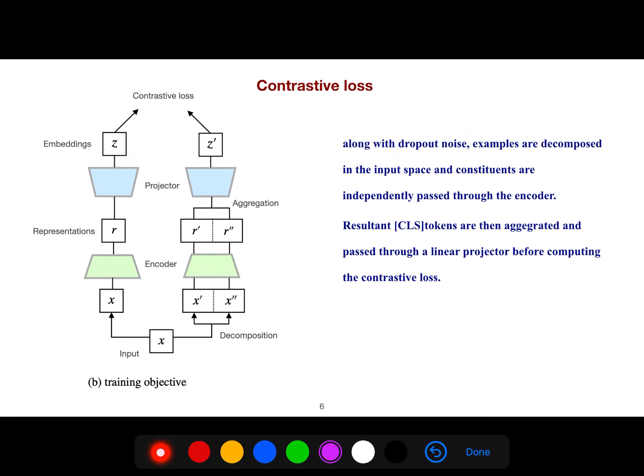Along with the dropout noise, examples are decomposed in the input space, and constituents are independently passed through the encoder. The resulting CLS tokens are then aggregated and passed through a linear projector before computing the contrastive loss.